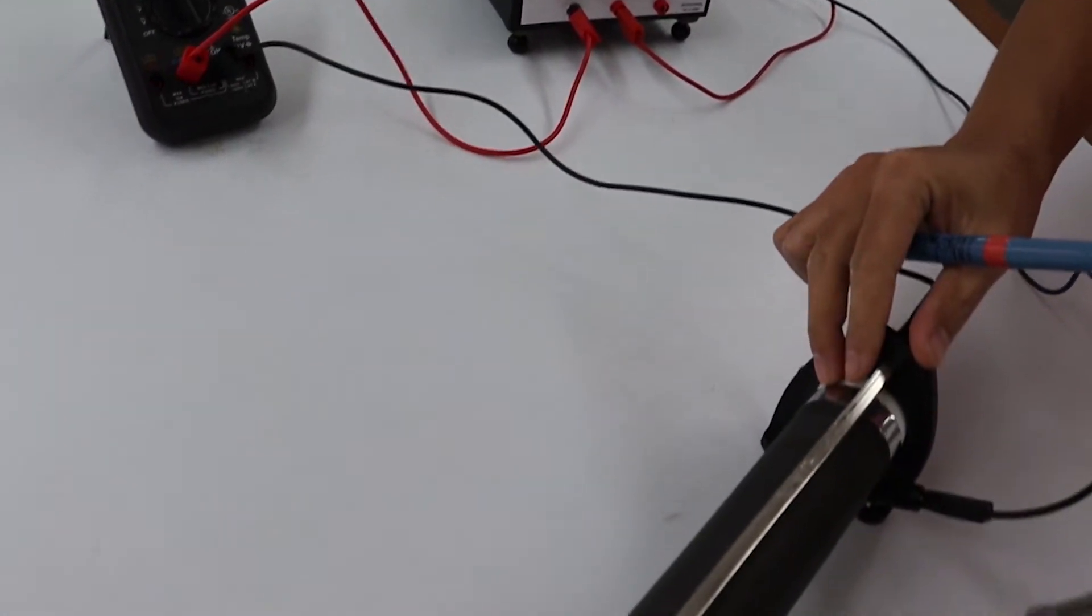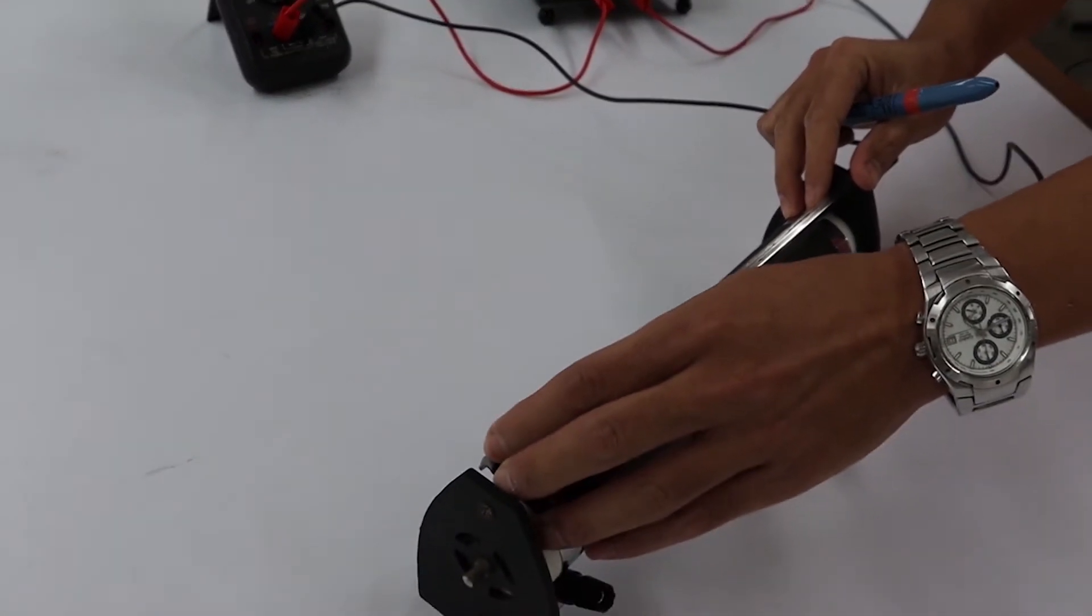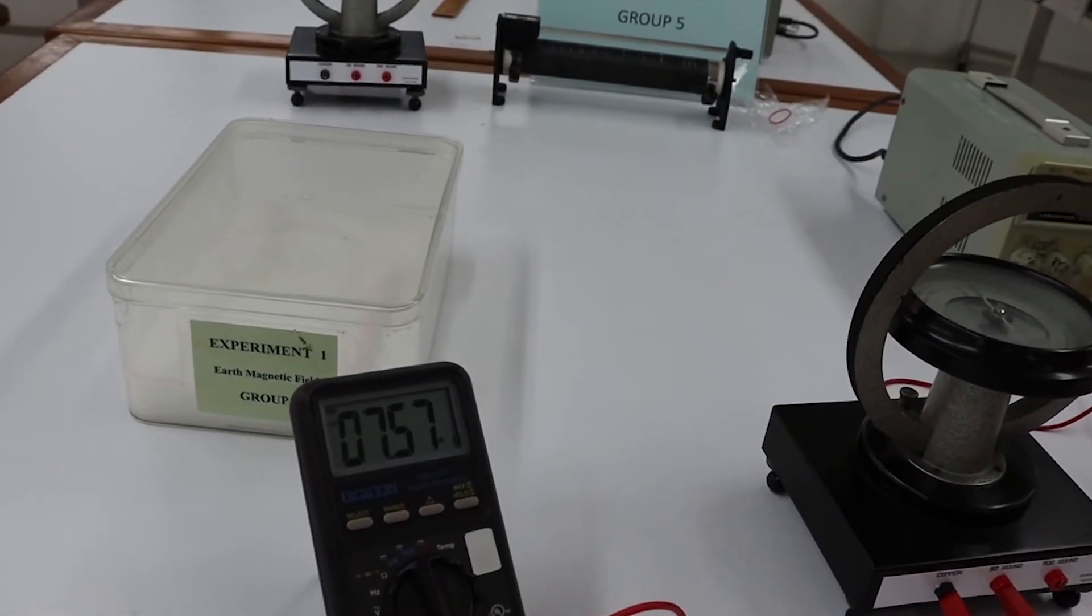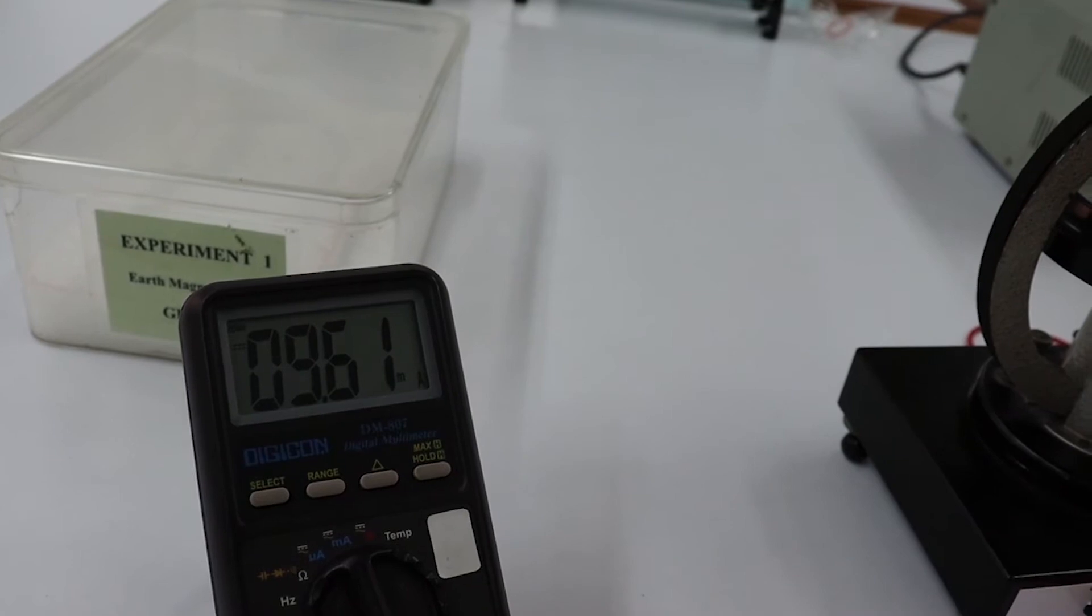After adjust the resistance of rheostat to be lower value, then the current will be higher. Then there are higher magnetic field from the coil.